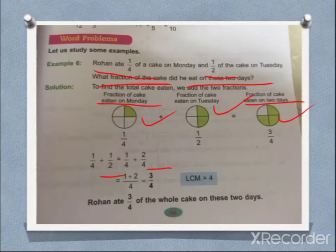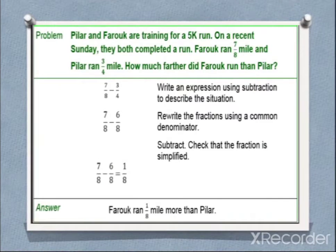Now let us take one more example. Pillar and Farooq are training for a 5K run. K is considered as 1000. On a recent Sunday, they both completed a run. Farooq ran 7/8 mile, Pillar ran 3/4 mile. How much farther did Farooq run than Pillar? Farther is the second degree adjective used to compare between two.